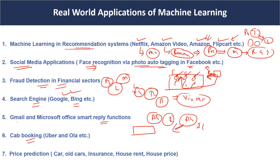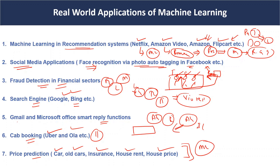Similarly, cab booking in Uber or Ola uses machine learning-based approaches. Price prediction models are also a big application — like car price prediction, old car price prediction, insurance prediction, house rent prediction, and house price prediction. In prediction-based applications we are also using machine learning algorithms. There are many domains where we are currently using machine learning.